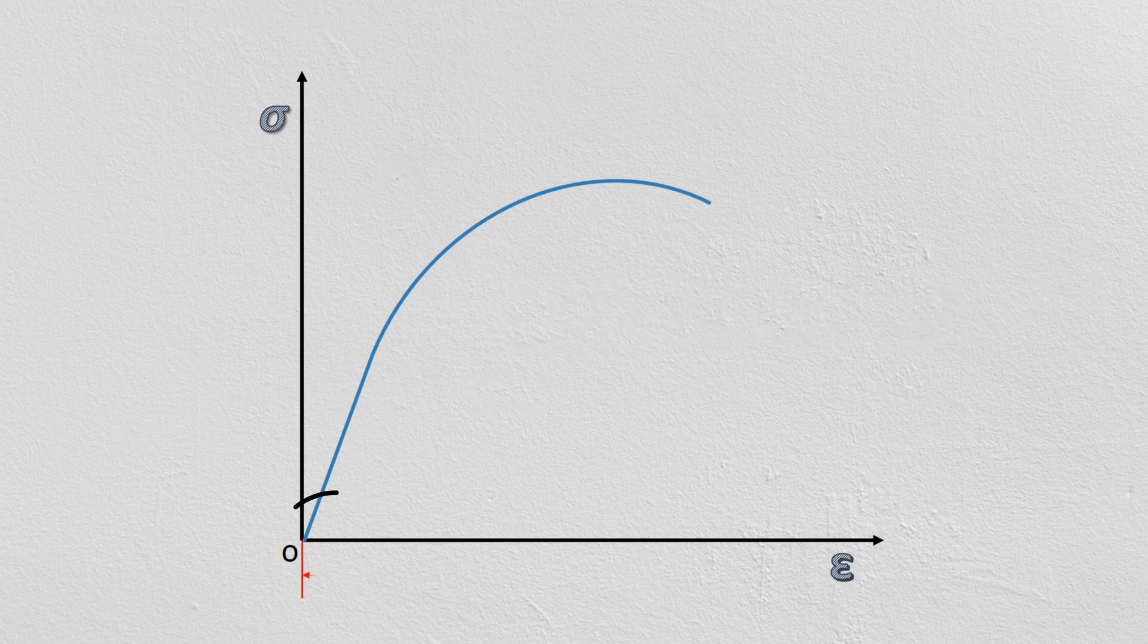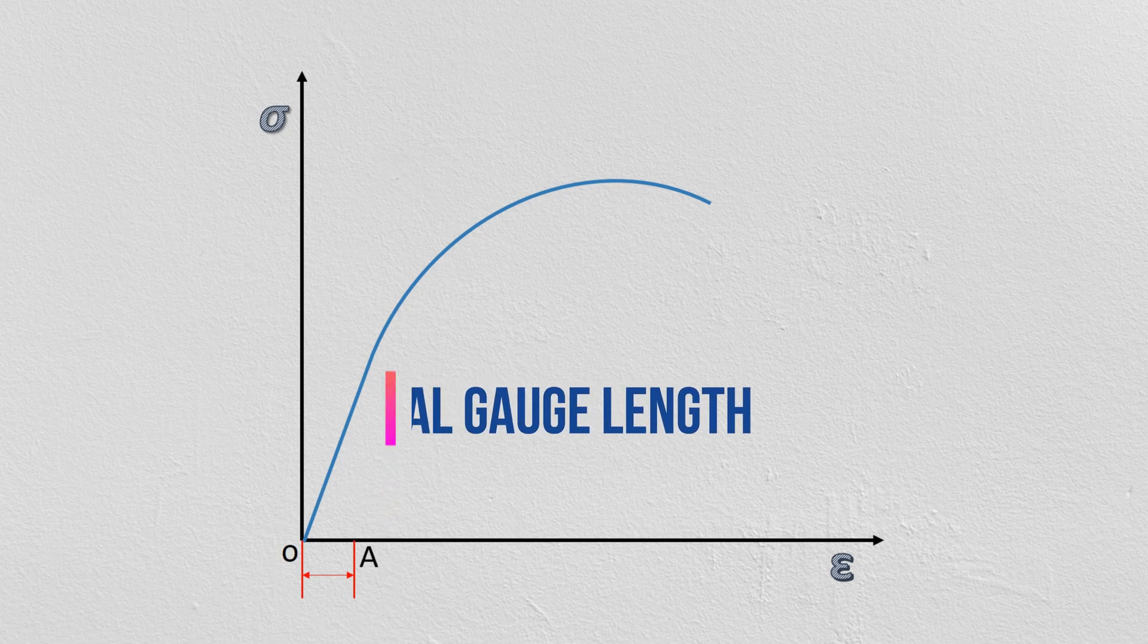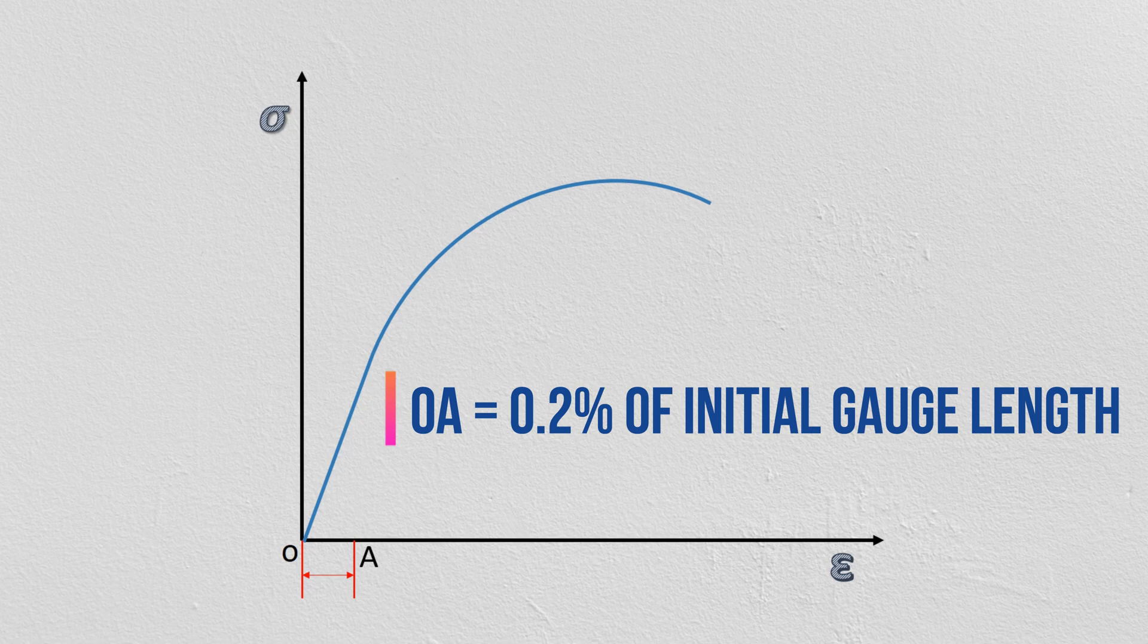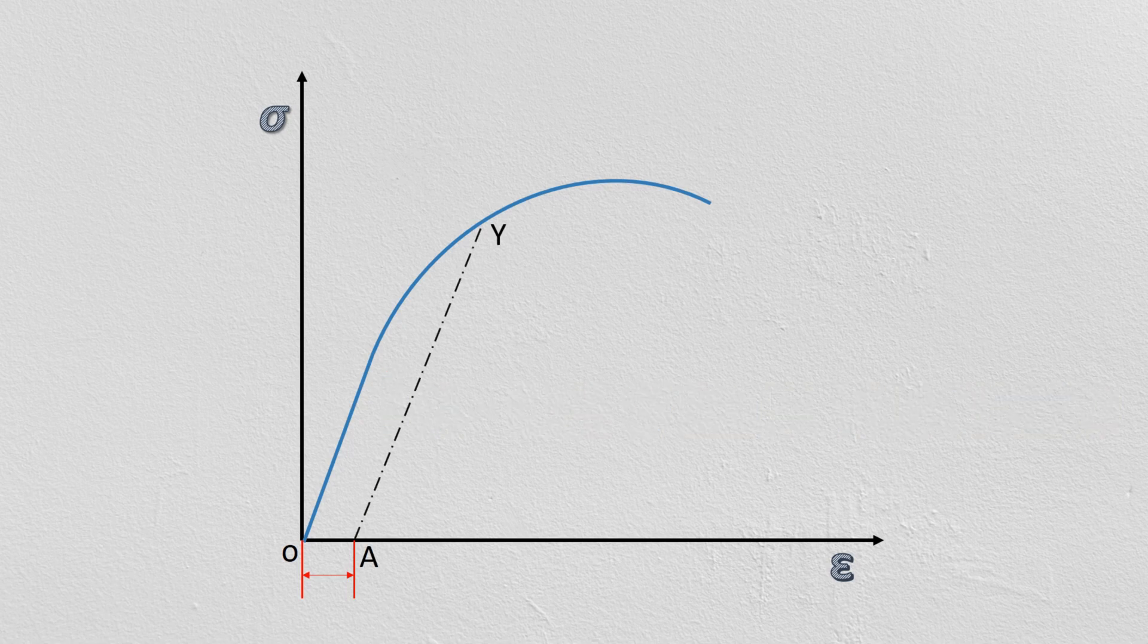In this method, the distance O A, which is 0.2% of the original gauge length, is marked on the x-axis. Then, a line A-Y is constructed from point A, which is parallel to the straight line of stress and strain curve.